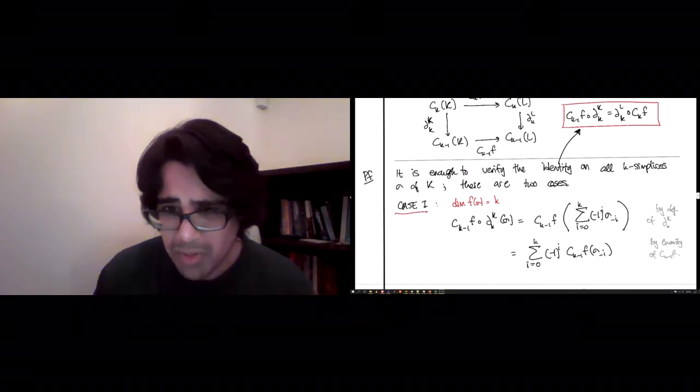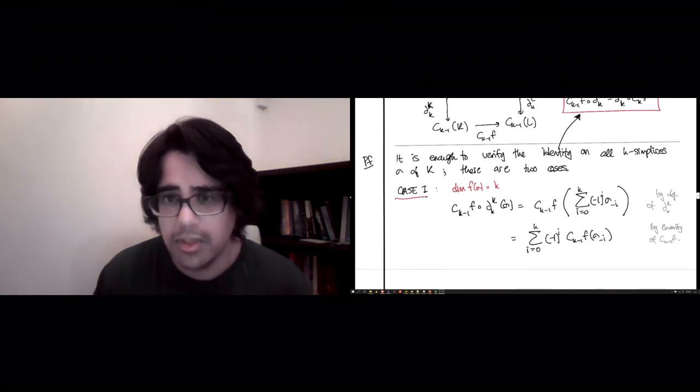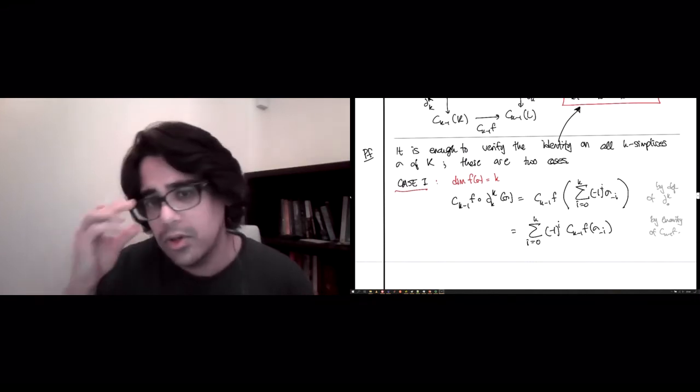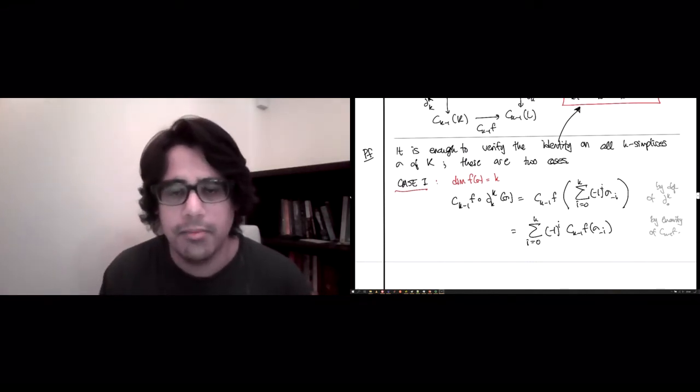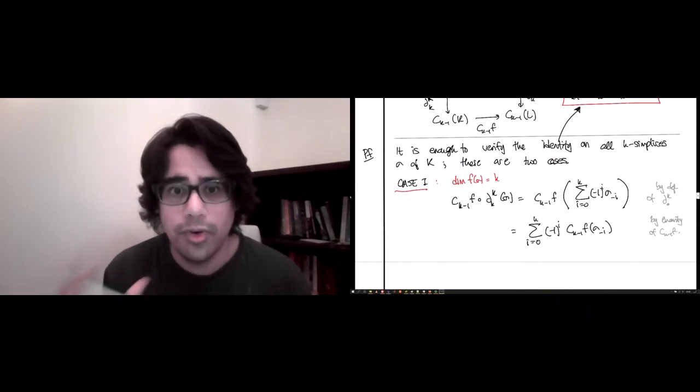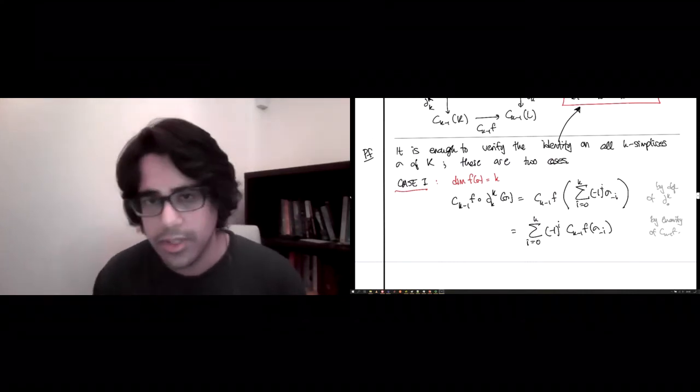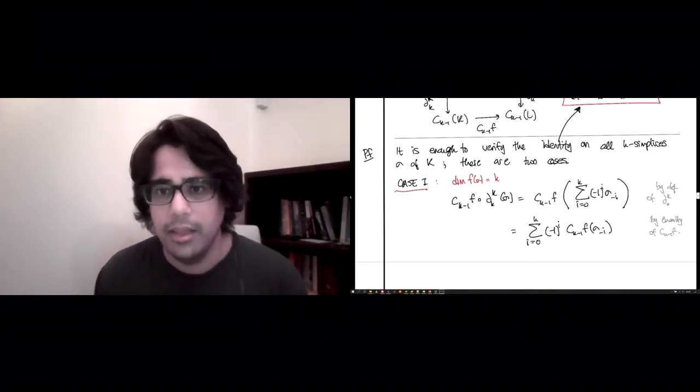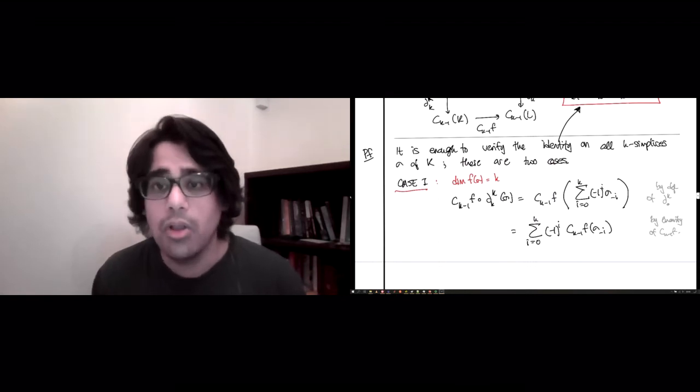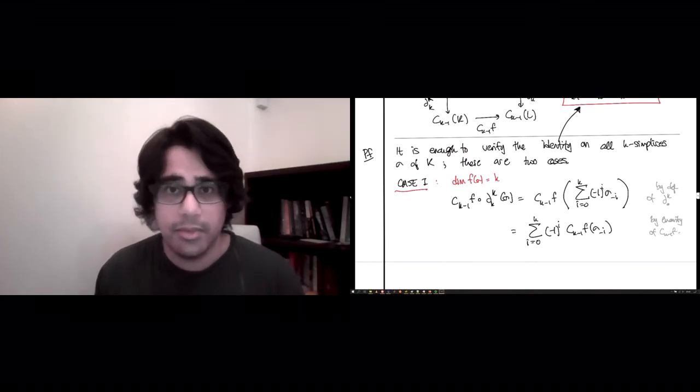Okay, we're not quite done, but we're really, really close. The thing to notice is that if dimension of f(σ) equals k, that means there are no two vertices of σ sent to the same vertex in L, which means that f must also be injective on the vertices of σ_i, which means it doesn't send any of them to 0.